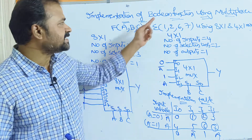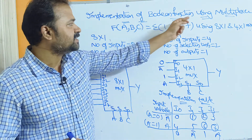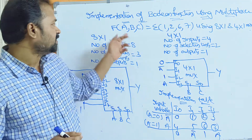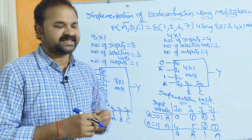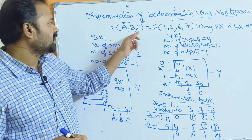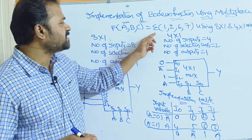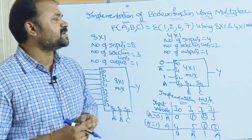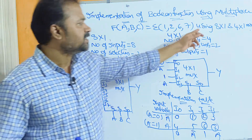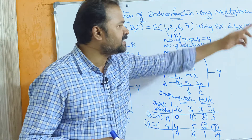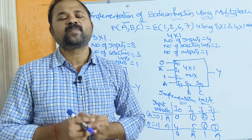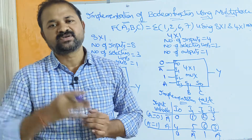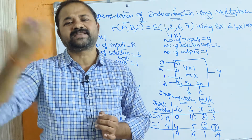Now let us implement a boolean function using a multiplexer. We have a boolean function f(a, b, c) = Σ(1, 2, 6, 7), which we will implement using an 8-by-1 multiplexer as well as a 4-by-1 multiplexer. In the next two videos we will see some more complex examples.